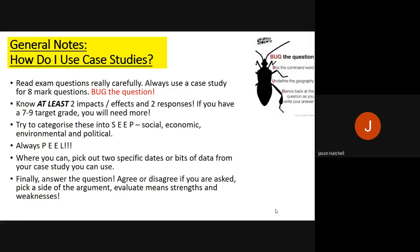When you get the question, 'bug' it. BUG means: B — put a box around the command word, which will usually be 'explain', 'evaluate' or 'assess'. U — underline the geography, what you are actually being asked to talk about. G — glance back at the question as you write your answer, doing so after every short paragraph to make sure you are still answering it.